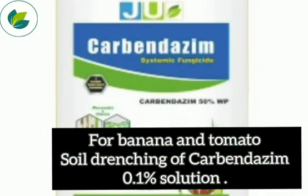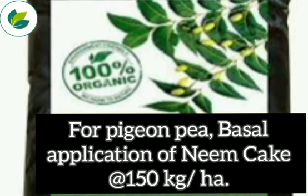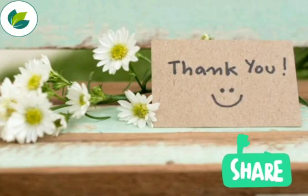For banana and tomato, soil drenching of carbendazim 0.1% solution around the pseudostem. For pigeon pea, basal soil application of neem cake at the rate of 150 kg per hectare. Thank you so much for watching this video.